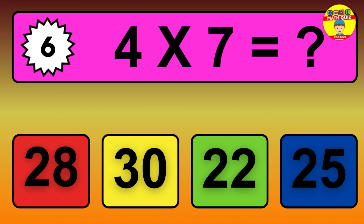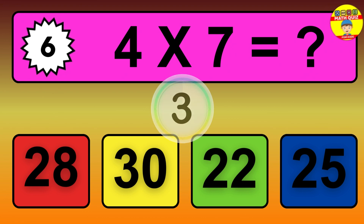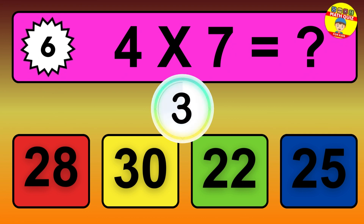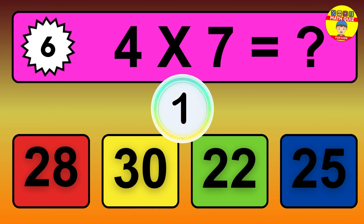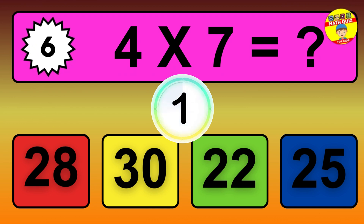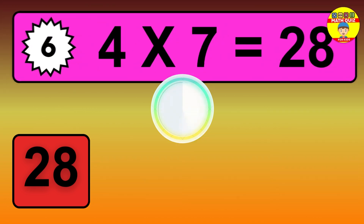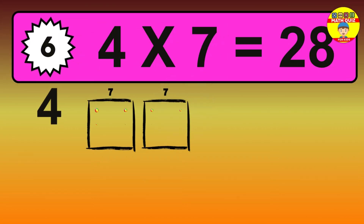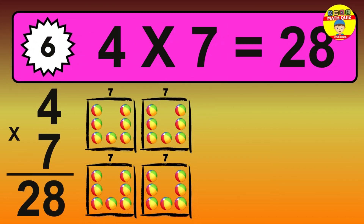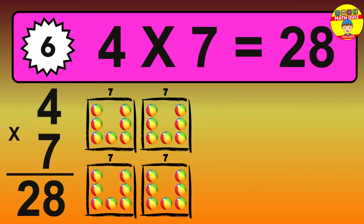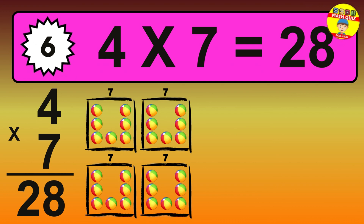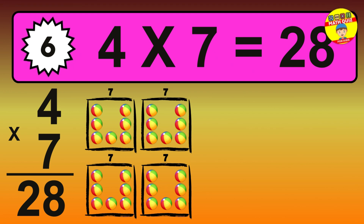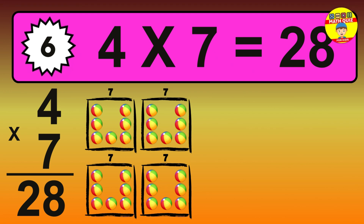Question 6. 4 times 7 equals what? The answer is 4 times 7 is 28. To calculate, we have 4 groups with 7 balls each. So how many balls do we have? 28 balls.